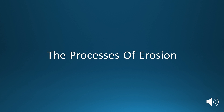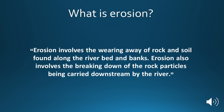Hi there, today we're going to be talking about the processes of erosion. The term erosion is a geographer's word to describe the process of water wearing a rock, usually either found at the coastline, like when a wave erodes the cliff face, or in a river channel, where the water within the river erodes the river's banks.